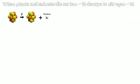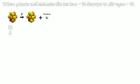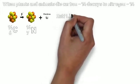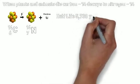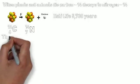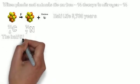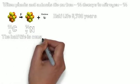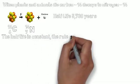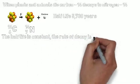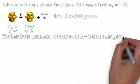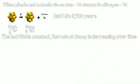And we can see a decrease in the amount of carbon-14 present. Now carbon-14 becomes nitrogen-14 via beta decay, where a neutron becomes a proton. And the half-life for this process is 5,730 years. So the half-life is continuous, but the rate of decay is decreasing over that time.